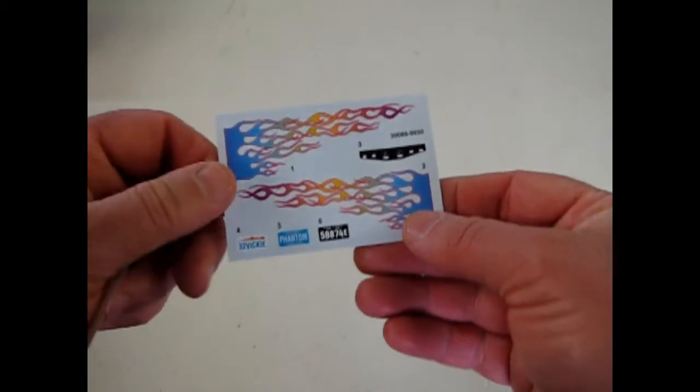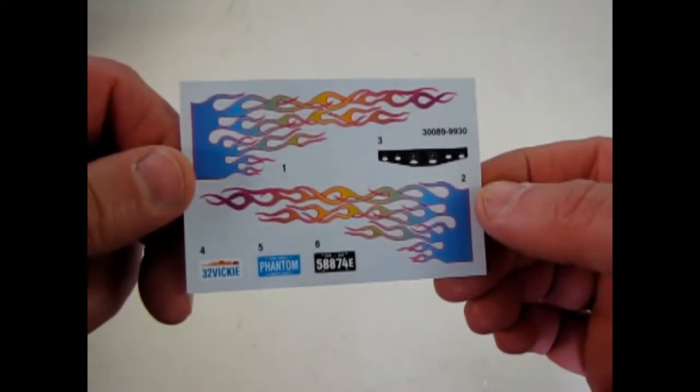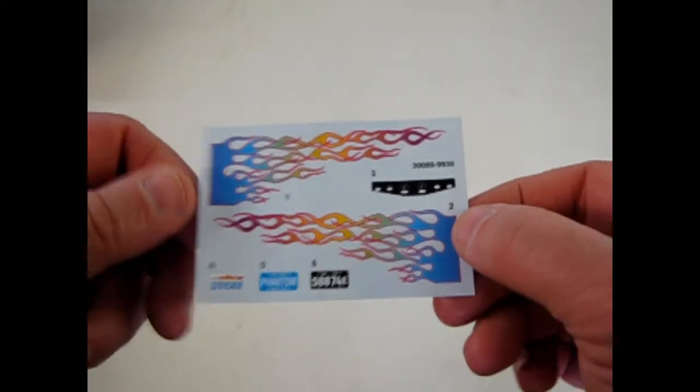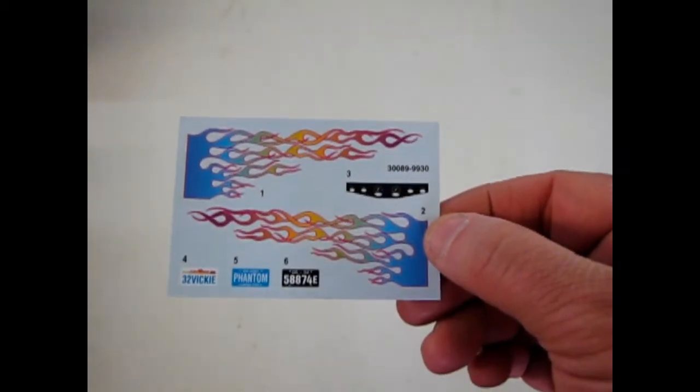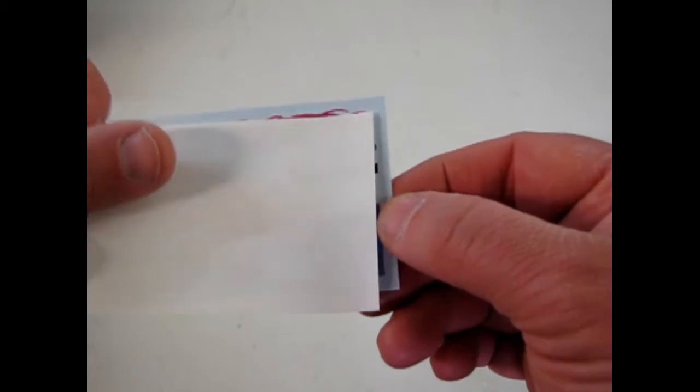Take a look at the decal sheet. The Rainbow Flames. It's a nice little touch. And they also give you a decal dashboard as well as some license plates. A little thing to join the blue printer, which I don't think they make that magazine anymore.